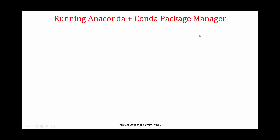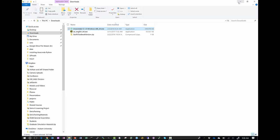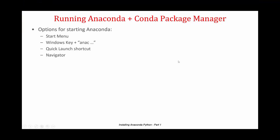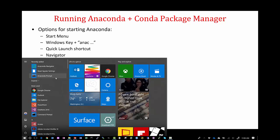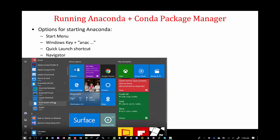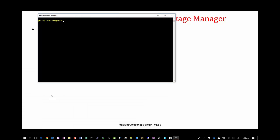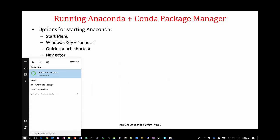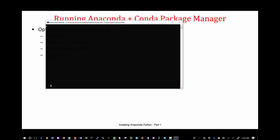Next, how do we use this? There are a couple of different ways to start Anaconda. First, there's the Start menu — hit the Windows key, scroll down, and you'll see an Anaconda folder. Click it and you'll see some options. If you take the Anaconda prompt, it will bring up the Anaconda prompt. You can see 'base' here — this is the environment, which we'll talk about in a bit. Another way is to use the Windows key and search — just type 'A-N-A' and it eventually finds it.